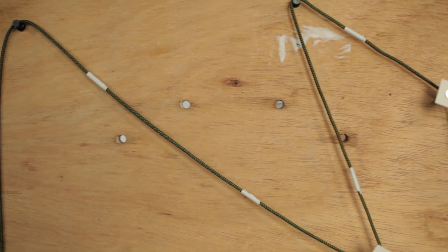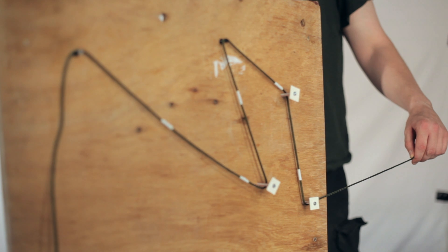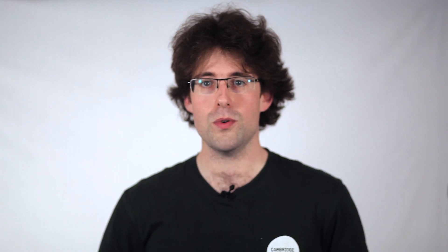Pulleys are another way of joining your chain reaction together. You can use them to change the direction of a force. They can be as simple as a bit of string over the end of a pin, a straw, or a piece of dowel.